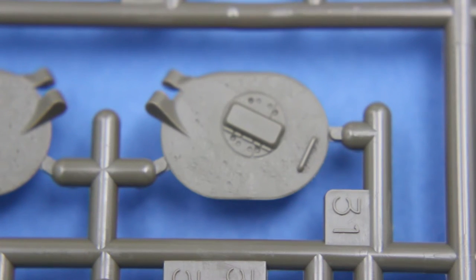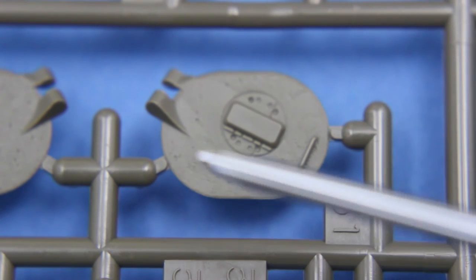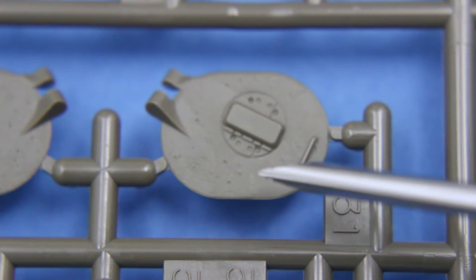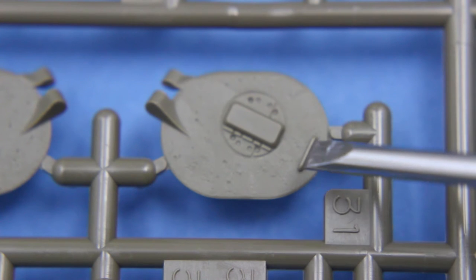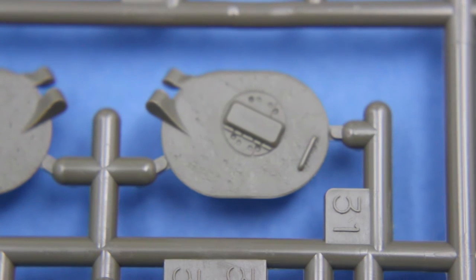These are the driver's and assistant driver's hatches. And they've got quite a nice texture on them. Although I think it's probably a little bit overdone. You can also see that the handle is moulded in one lump. Very 1970s style.